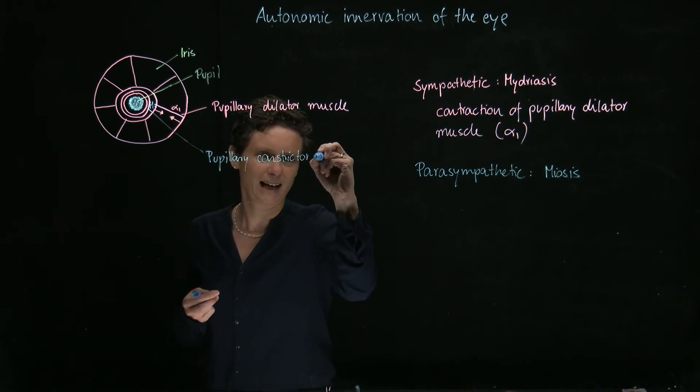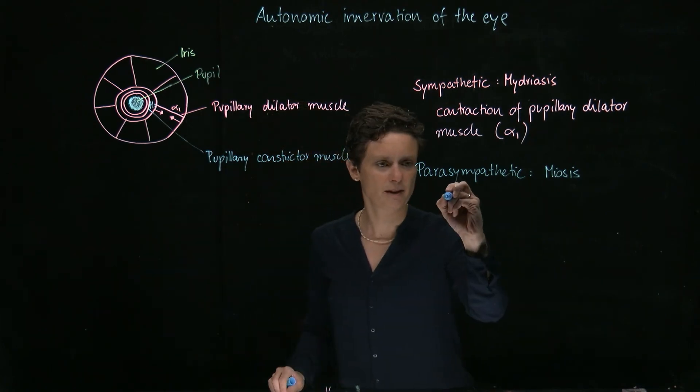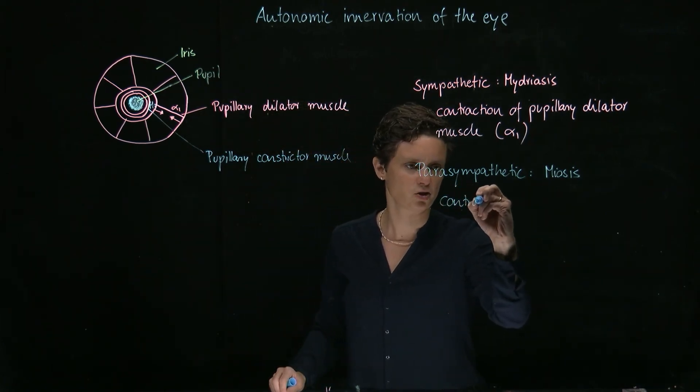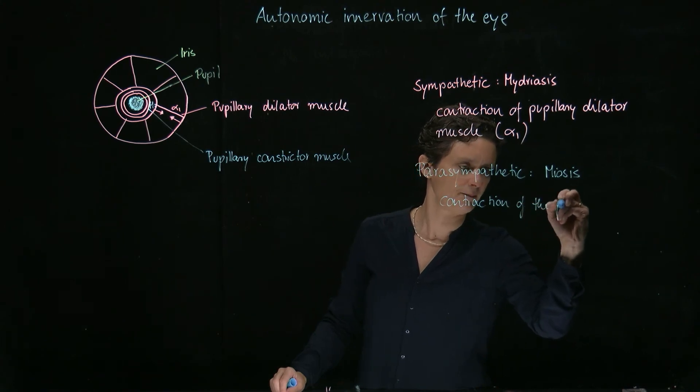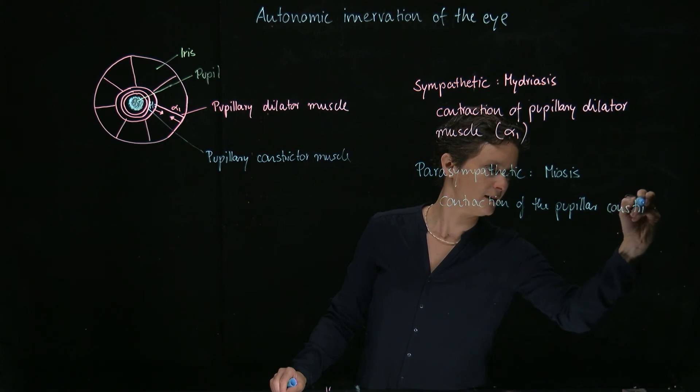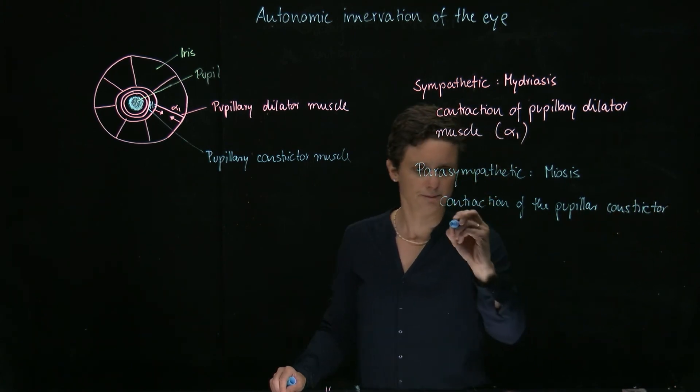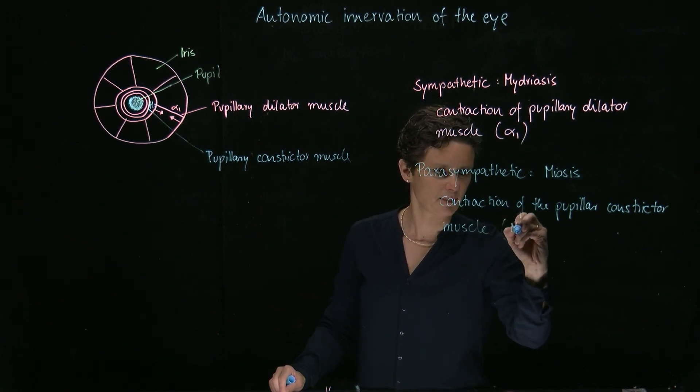And this is called the pupillary constrictor muscle. And again, a very nice name because it tells you the effect. So the parasympathetic nervous system mediates contraction of the pupillary constrictor muscle, and this is mediated by M3.